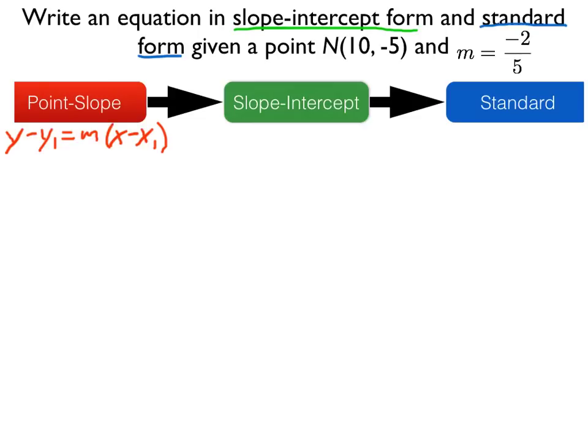We'll need a slope, well we're given slope, that's up top here, negative 2 fifths, and we need a point, that's point N, which is 10, negative 5. So let's substitute those values into the point-slope form.